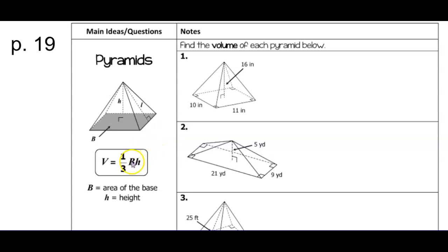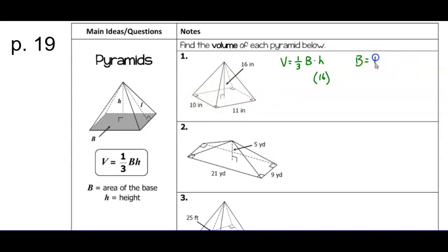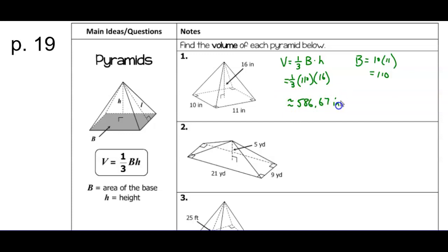For example one, the height is 16. The volume formula is one-third times the area of the base times the height, so I put 16 in the height position. The base looks rectangular, so length times width gives 10 times 11, which equals 110. Putting 110 in for the base area, then calculating one-third times 110 times 16 gives a volume of 586.67 cubic units.